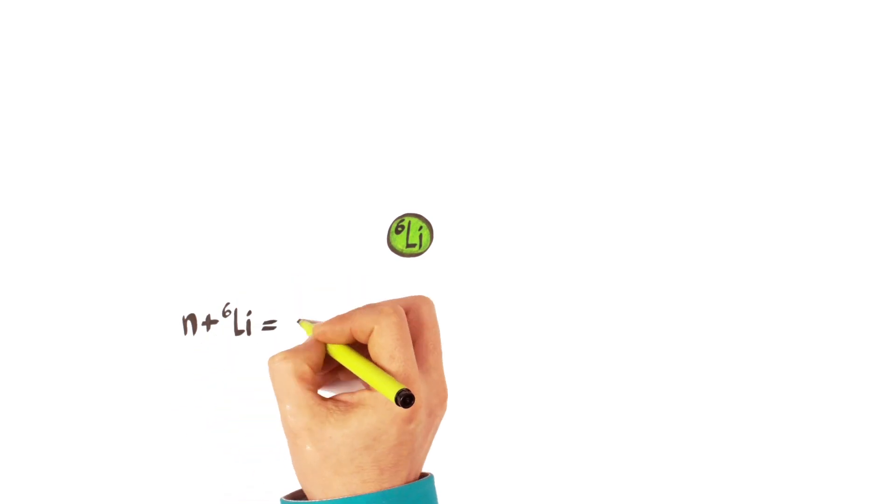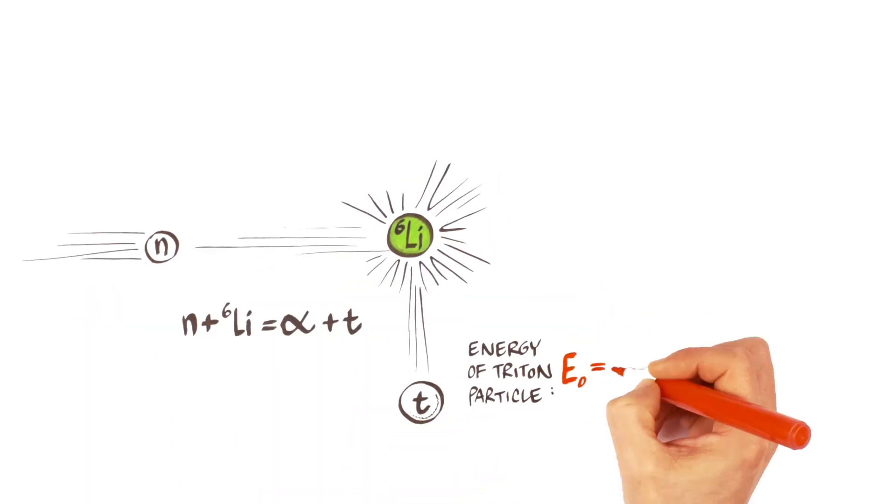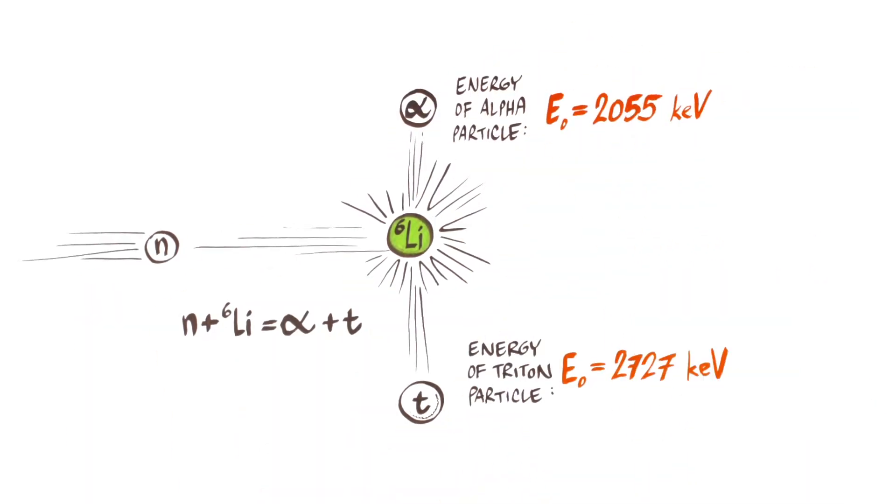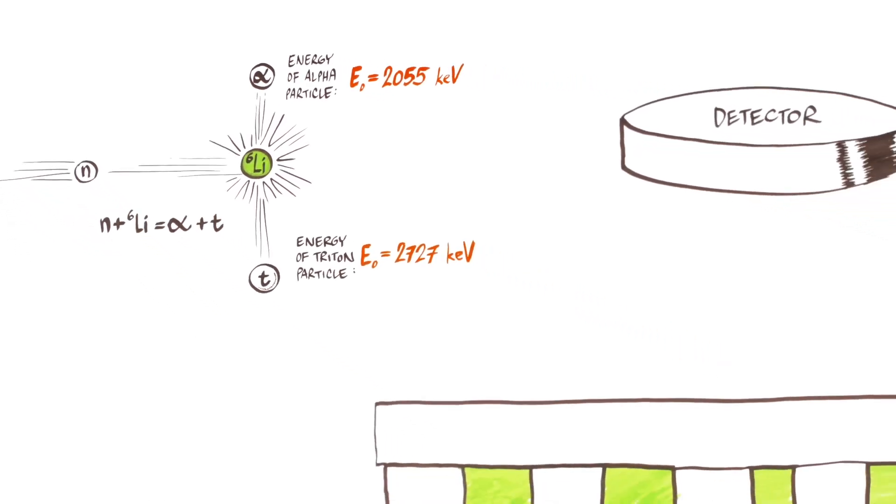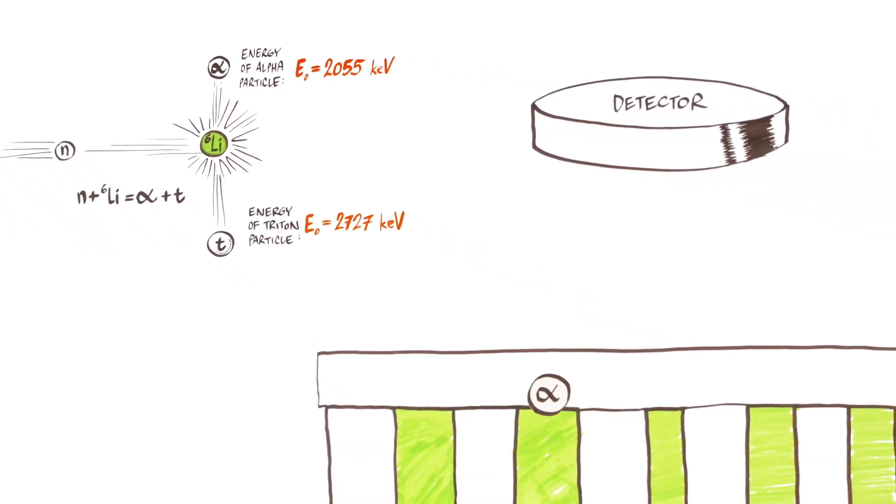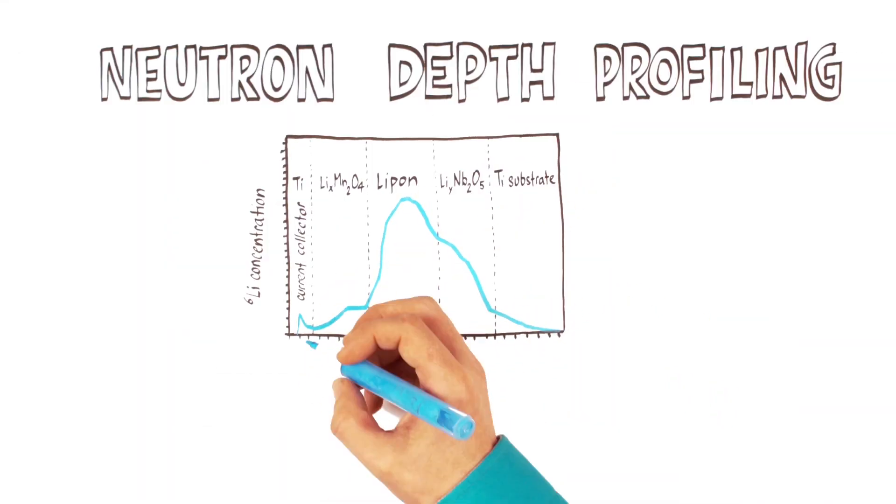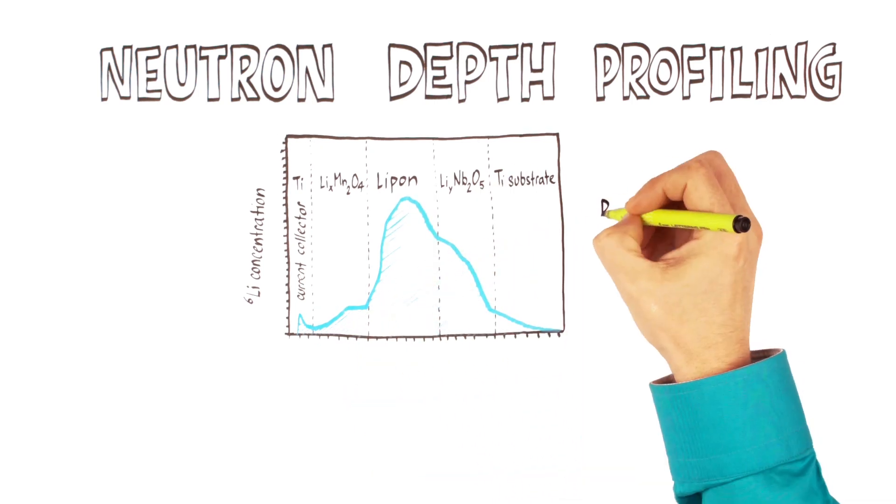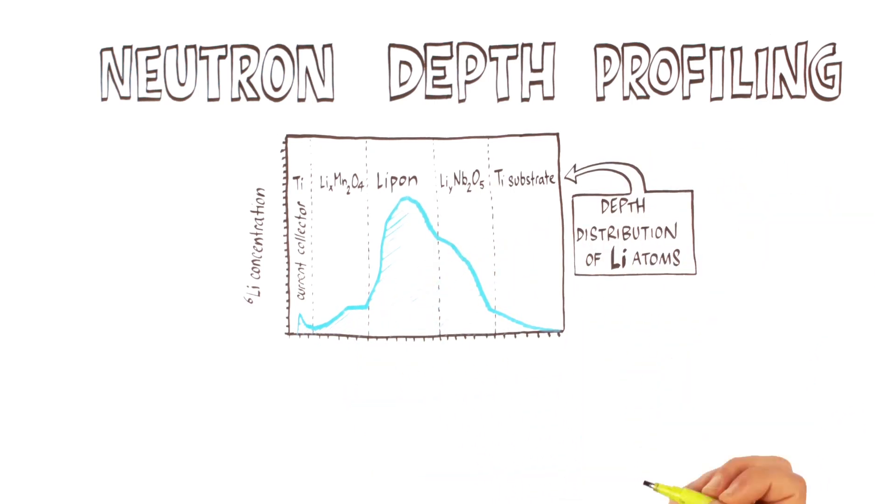The products of this nuclear reaction, triton and alpha particles, have a well-defined energy. When passing through matter, they lose a part of their energy in proportion to the depth of their origin, so that the difference between the original energy and the energy after the particle escapes from the material measured by a detector can be precisely converted to the depth of its origin, hence determining the position of the lithium ion.